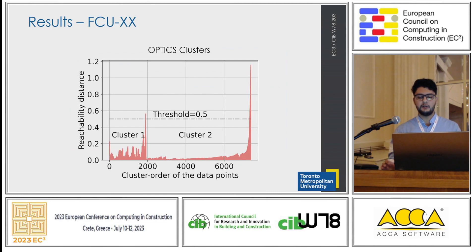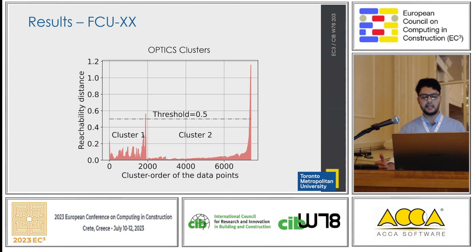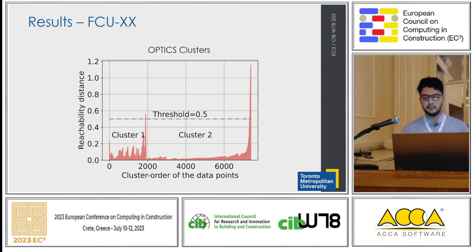Here we see the output of OPTICS clustering. Unlike most other clustering algorithms that directly group data points into clusters, the output from OPTICS is a list of ordered data points with respect to reachability distance, allowing for visualization and cluster identification. The valleys under the threshold, separated by the intersection of the threshold and the reachability distance, indicate the existence of a cluster. For fault detection, we can consider a threshold of 0.5 for this example to have just two clusters — normal and faulty. Or we can decrease the threshold to have more clusters to check for the presence of multiple faults using the temporal distribution of identified clusters.